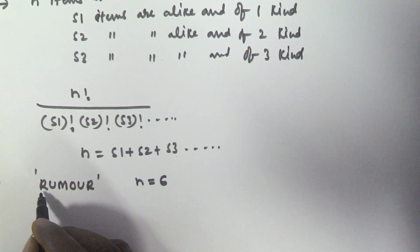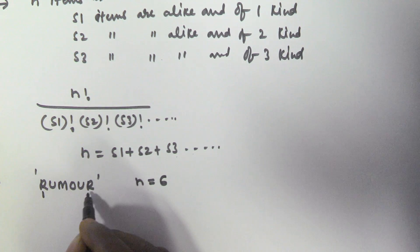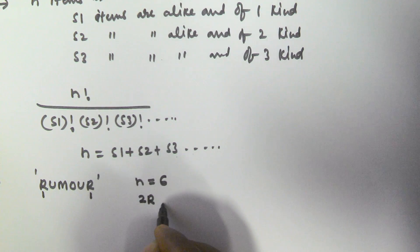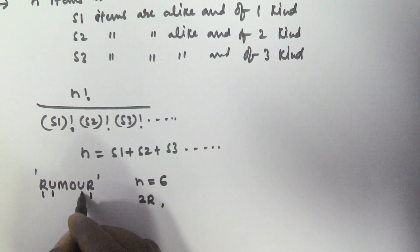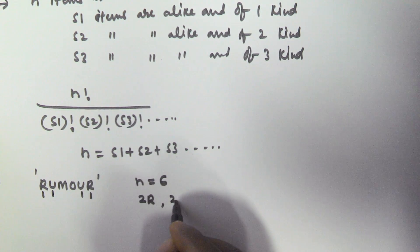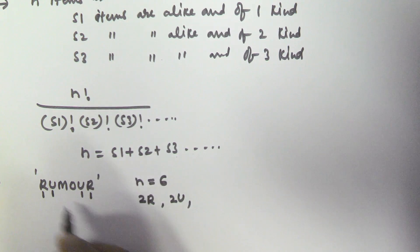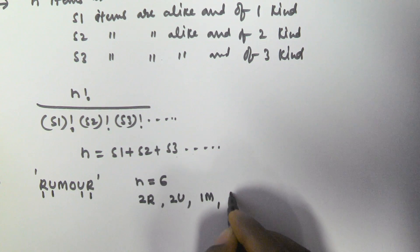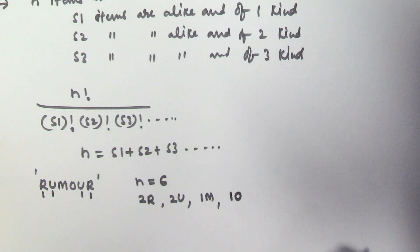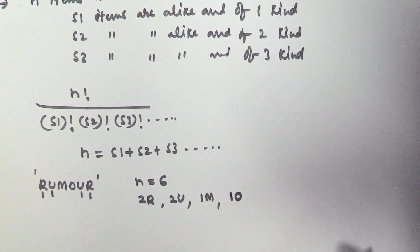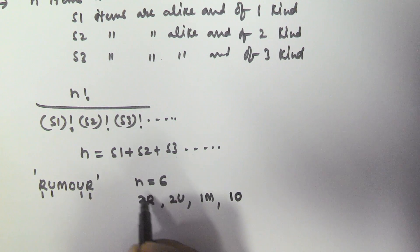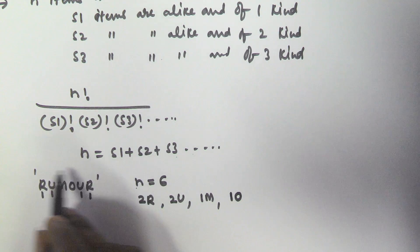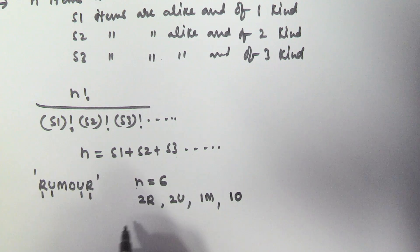In this word, two R's are there, two U's are there, one M is there, and one O is there. So the number of possible permutations, meaning the arrangement of these six letters, is given by the formula.